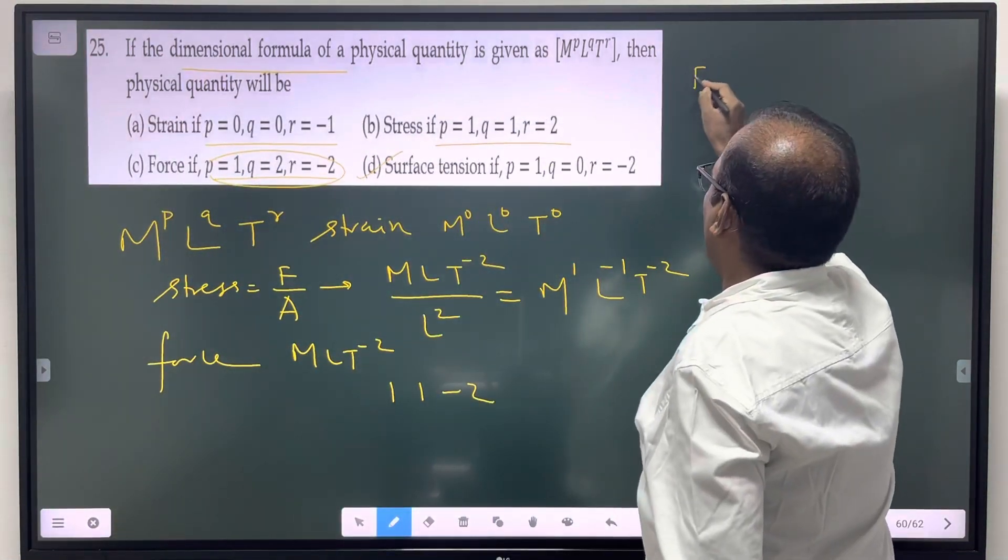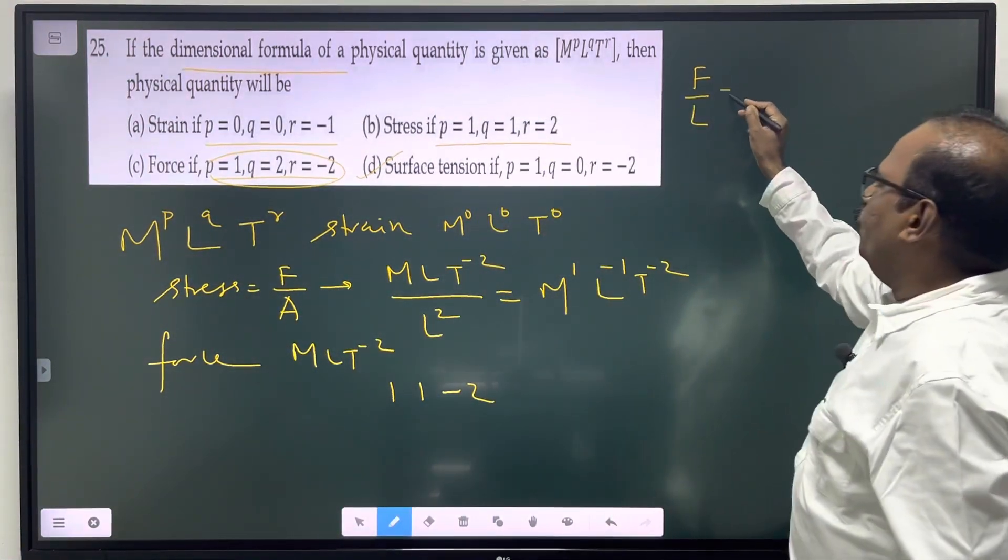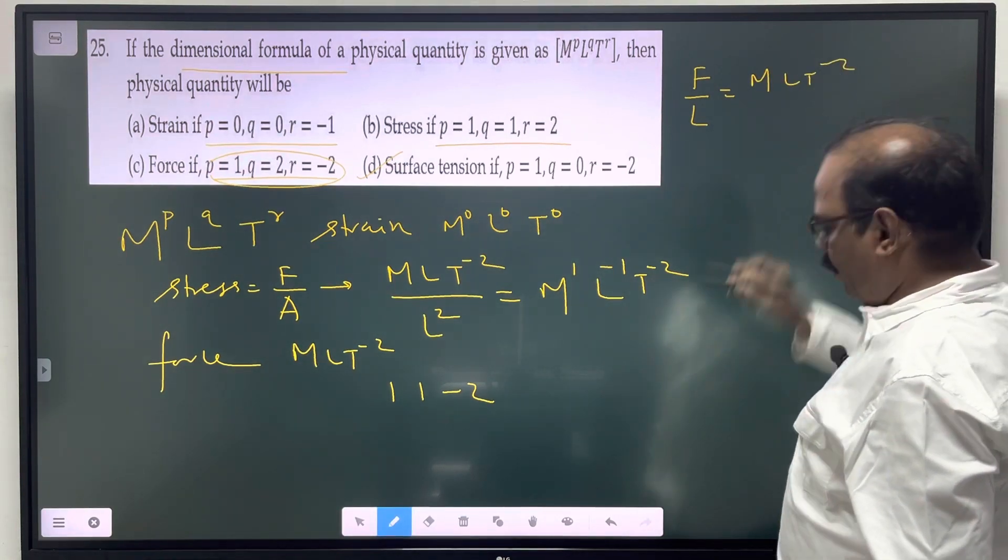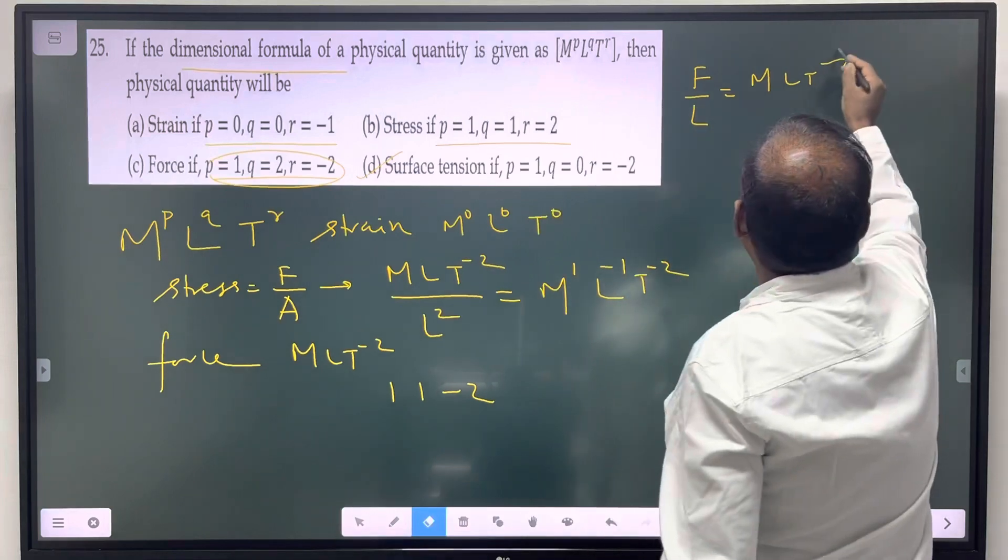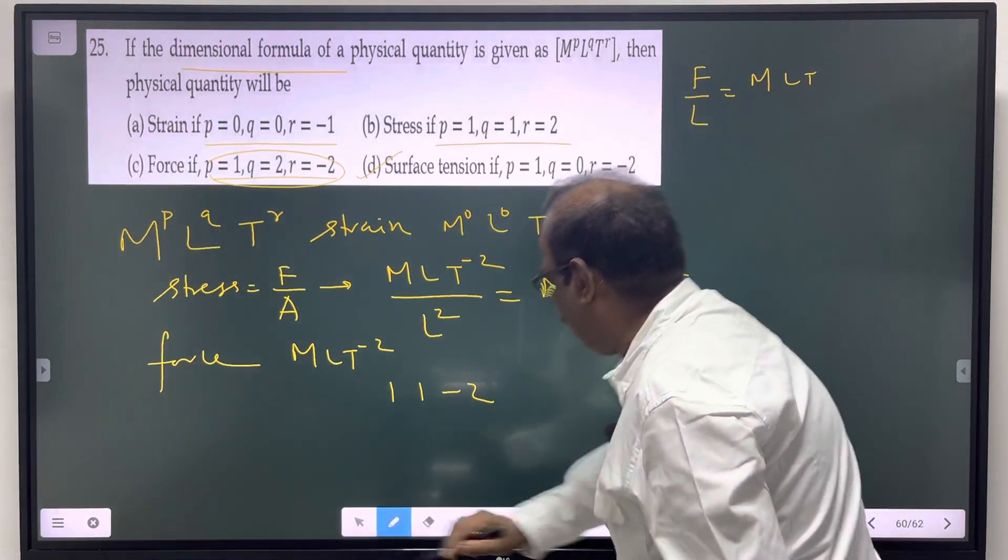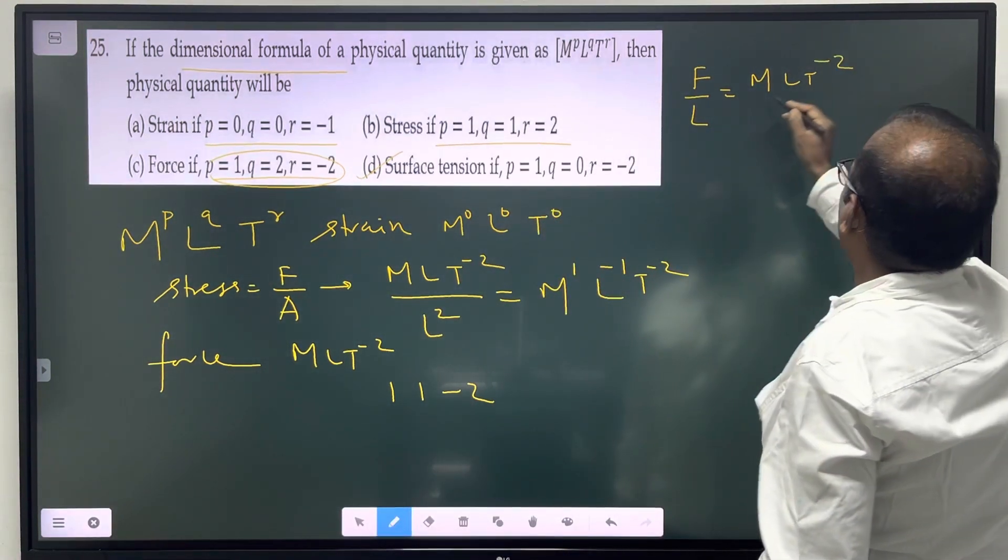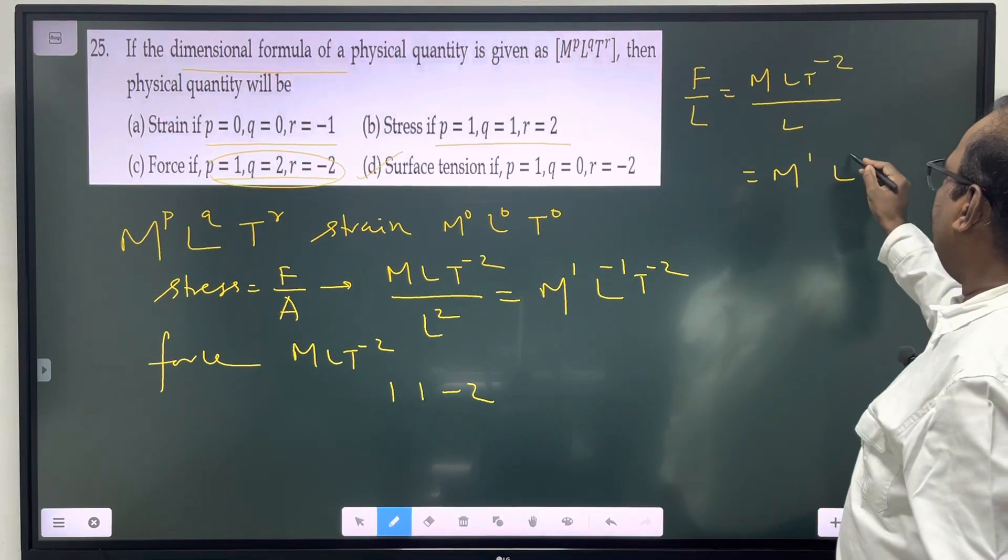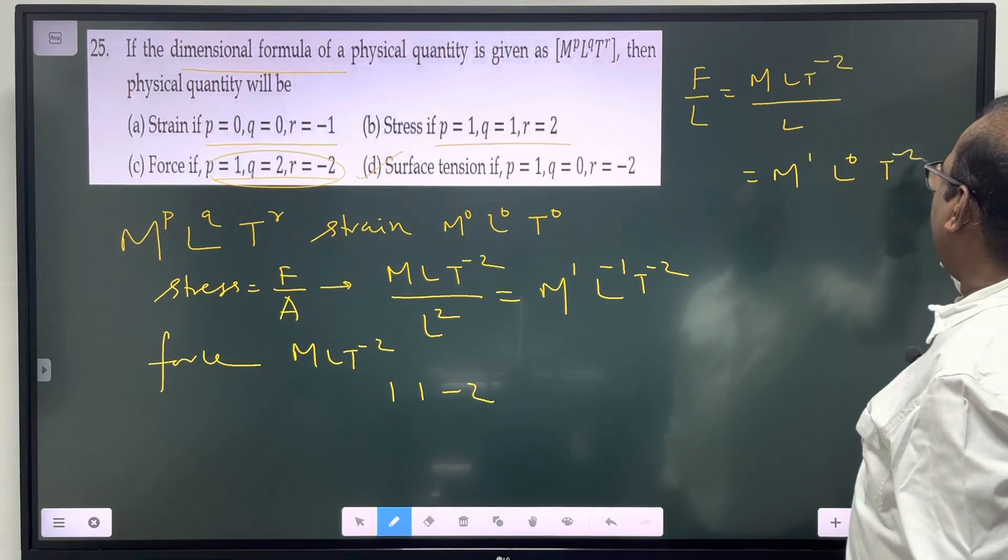Surface tension - force by length. Force is mass into acceleration divided by length. This one is correct, it is minus 2. Divided by length additional, M power 1, L power 0, T power minus 2.